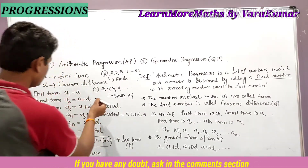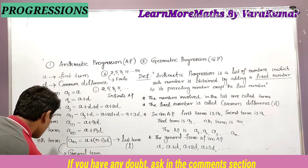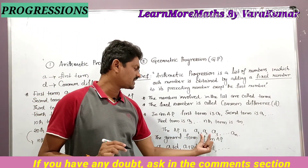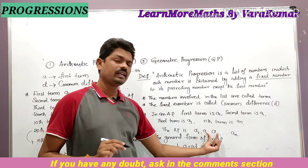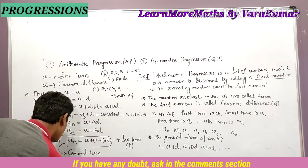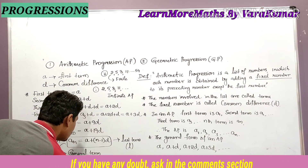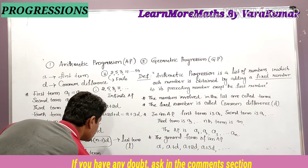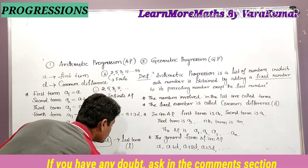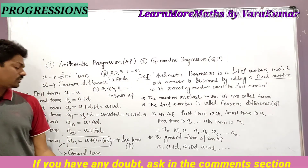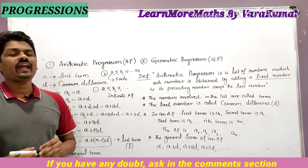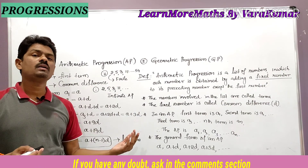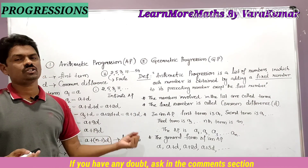Now let's learn how to find the common difference. The common difference d is the difference between any two successive terms: d = a2 - a1 = a3 - a2 = a4 - a3, and so on. This is how we find the common difference. Next, we will solve some problems related to the introduction of Arithmetic Progression.